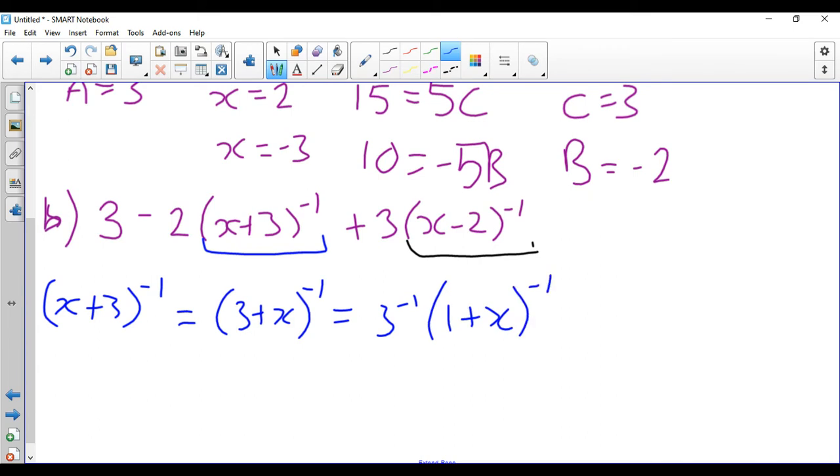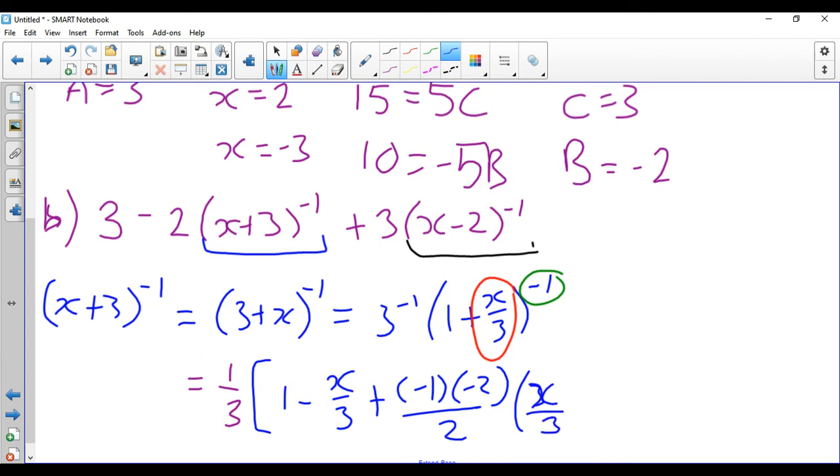Now, hopefully you caught that before I did, if you're on the ball. When factorizing out a 3, that's going to have to be x over 3 there. So minus 1 is my n, x over 3 is my x, for lack of a better way of saying it. So I have got a third, open brackets. 1 minus x over 3 plus n, n minus 1 over 2 factorial. I do just put a 2. Typical mathematician, I like to be efficient. Squared.